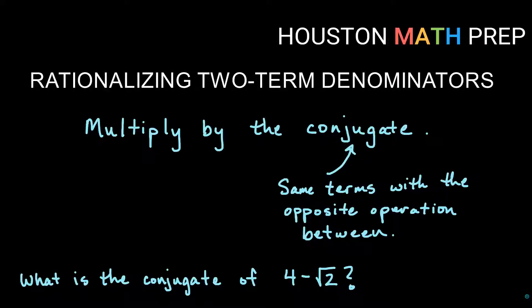Hey everyone, we wanted to do a separate video on rationalizing denominators that have two terms in them. So you have a term plus another term or a term minus another term in the denominator, and you have some square root in it.